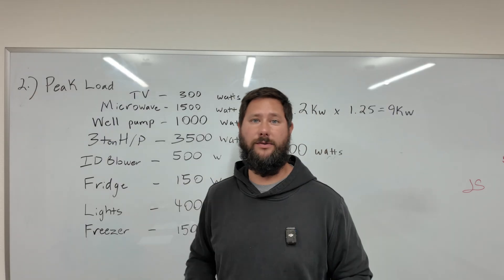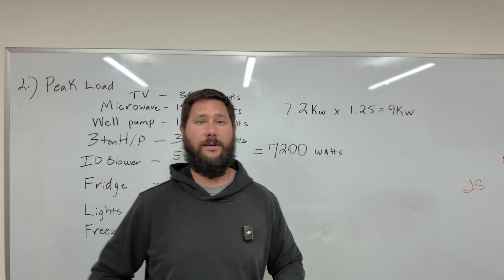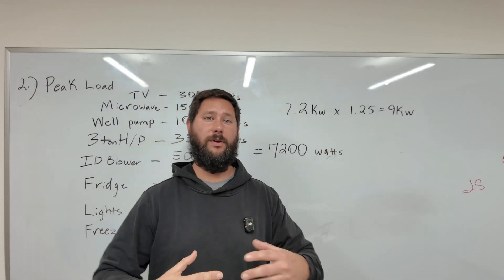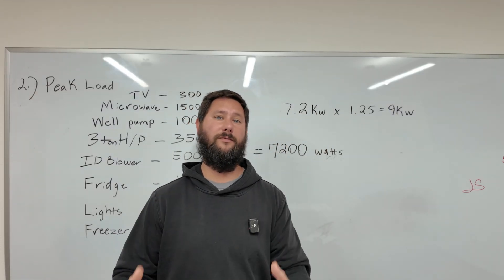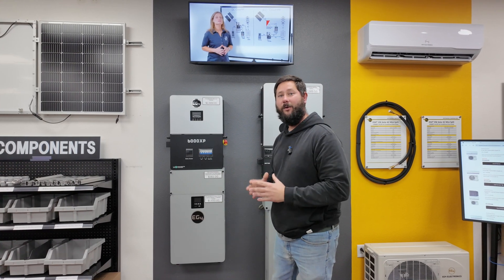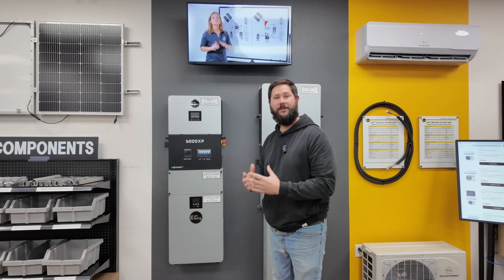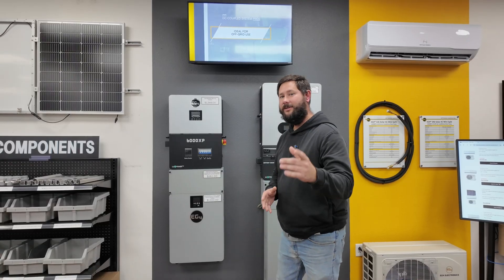Now we add our safety factor: we take the 7.2 kilowatts times 1.25, which equals 9 kilowatts. This can now be used to size and pick out the right inverter. Now that we know our peak load is 9,000 watts or 9 kilowatts, we can choose the right inverter to handle our application.